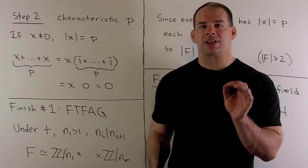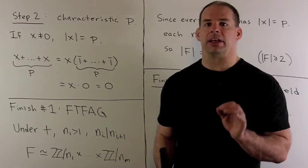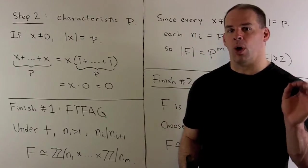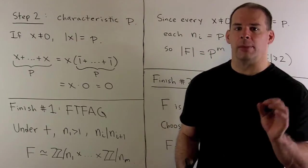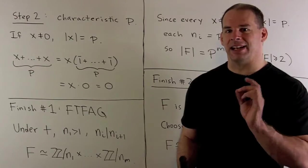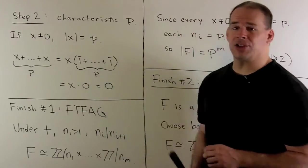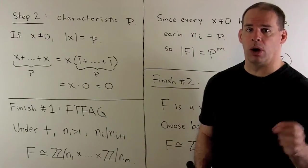So, we get a zero out. That means the order of x under addition is going to divide p. Since p is a prime, that means the order is equal to one or p. The only element that can have order one is the identity element zero. So, if x is not equal to zero, then the order of x under addition is p, and that's what we want.